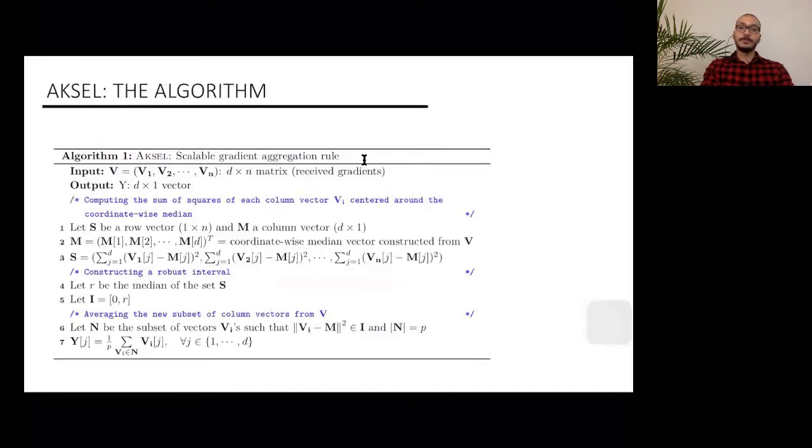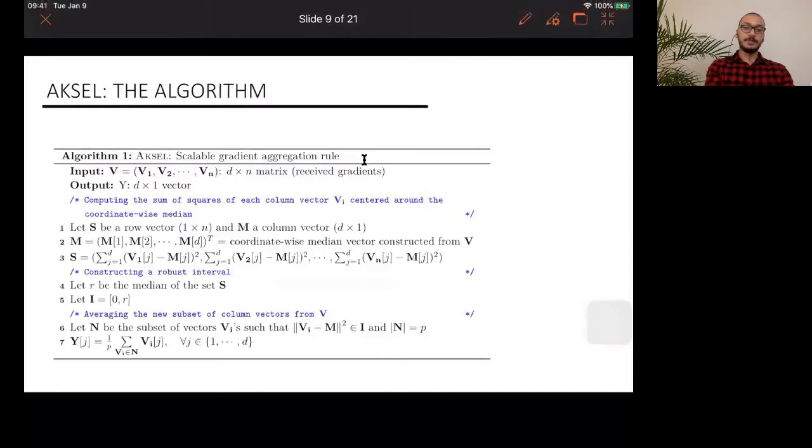So here is our algorithm. It is based on very simple functions like addition, subtraction, computing norms, and medians. Basically, we try to come up with the closest vector to the coordinate-wise median, which is itself a good robust estimator, but only constructed from full gradient. So we do this first by computing the coordinate-wise median, and we store it in the vector m. And we subtract it from every vector, every column vector in the matrix.